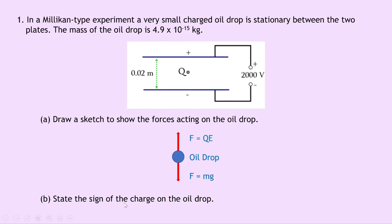Part B says to state the sign of the charge on the oil drop. Well in this case for the oil drop to be stationary here we need the charge on the oil drop to be negatively charged, so that it's repelled away from this lower plate and it's attracted towards the upper plate. And we need the sign of the charge on the oil drop to be negative, so that the gravitational field downwards is in the opposite direction to the electrostatic force upwards.